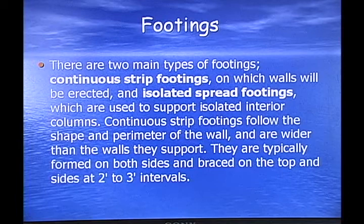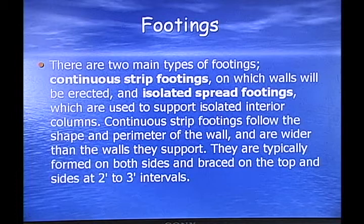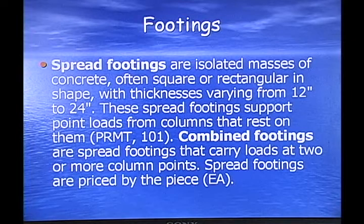There are two main types of footings: continuous strip footings, on which walls will be erected, and isolated spread footings, which are used to support isolated interior columns. Continuous strip footings follow the shape and perimeter of the wall and are wider than the wall they support. They're typically formed on both sides and braced on the top and sides at two to three foot intervals.